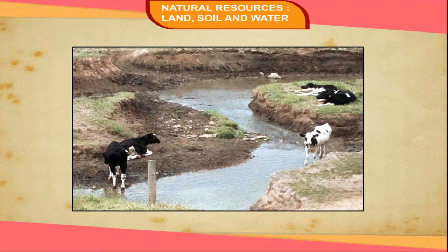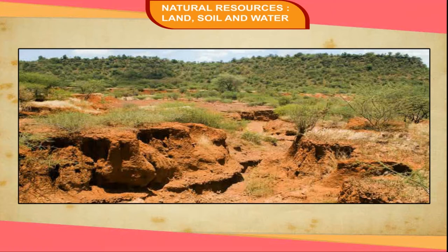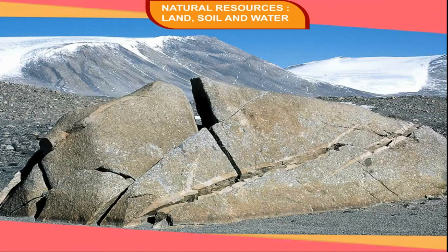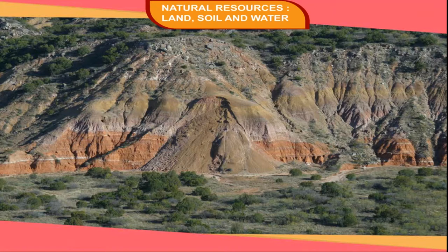The uppermost thin layer of earth's crust that supports all vegetation is known as soil. All living beings including plants and animals depend directly or indirectly on soil for their survival. Temperature and rainfall are the main climatic factors affecting soil formation. Frequent changes in temperature and presence of water quicken soil formation through increased weathering of rocks. Dead plants and organisms provide humus to the soils, making them fertile.